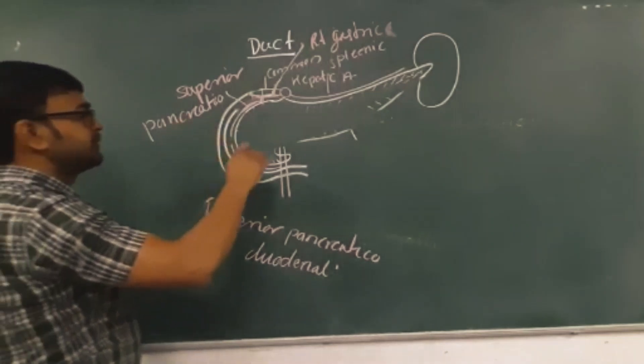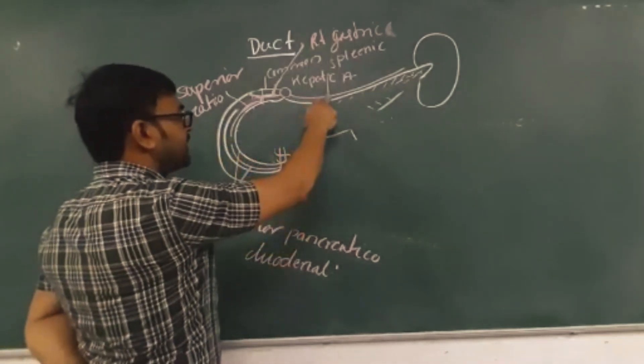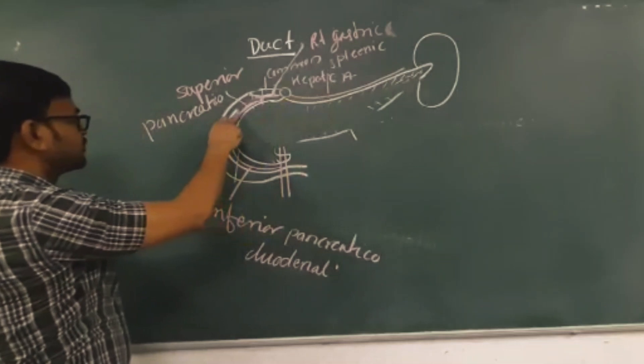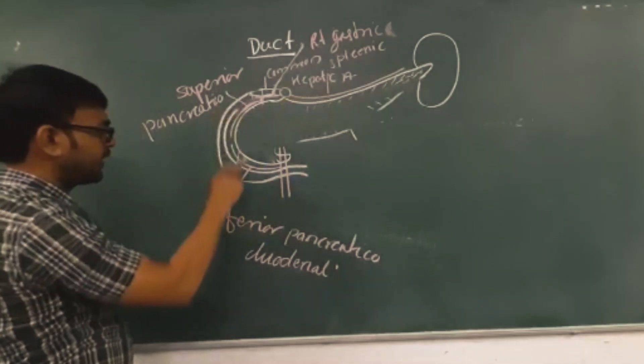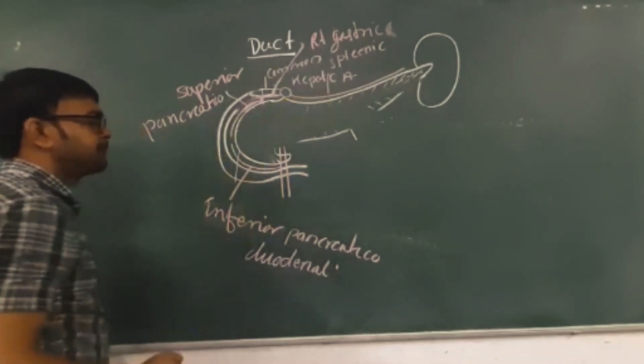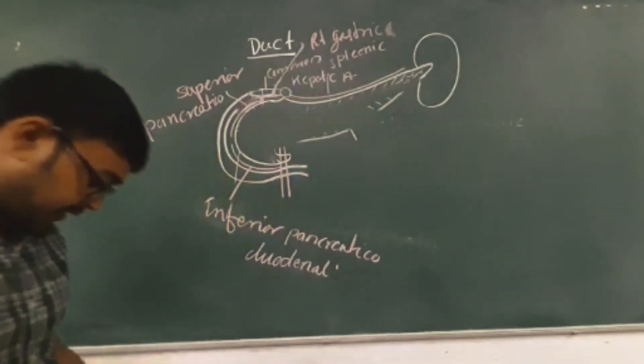So the pancreas is mainly supplied by the splenic artery, the superior pancreaticoduodenal artery, and the inferior pancreaticoduodenal artery.